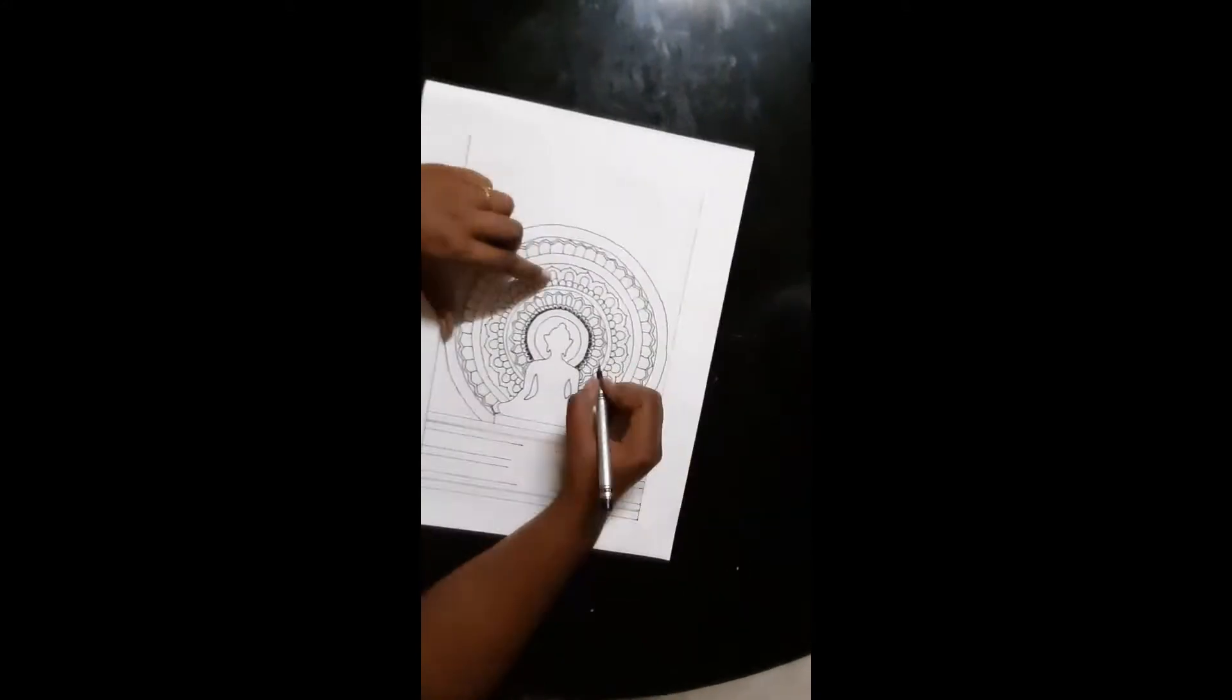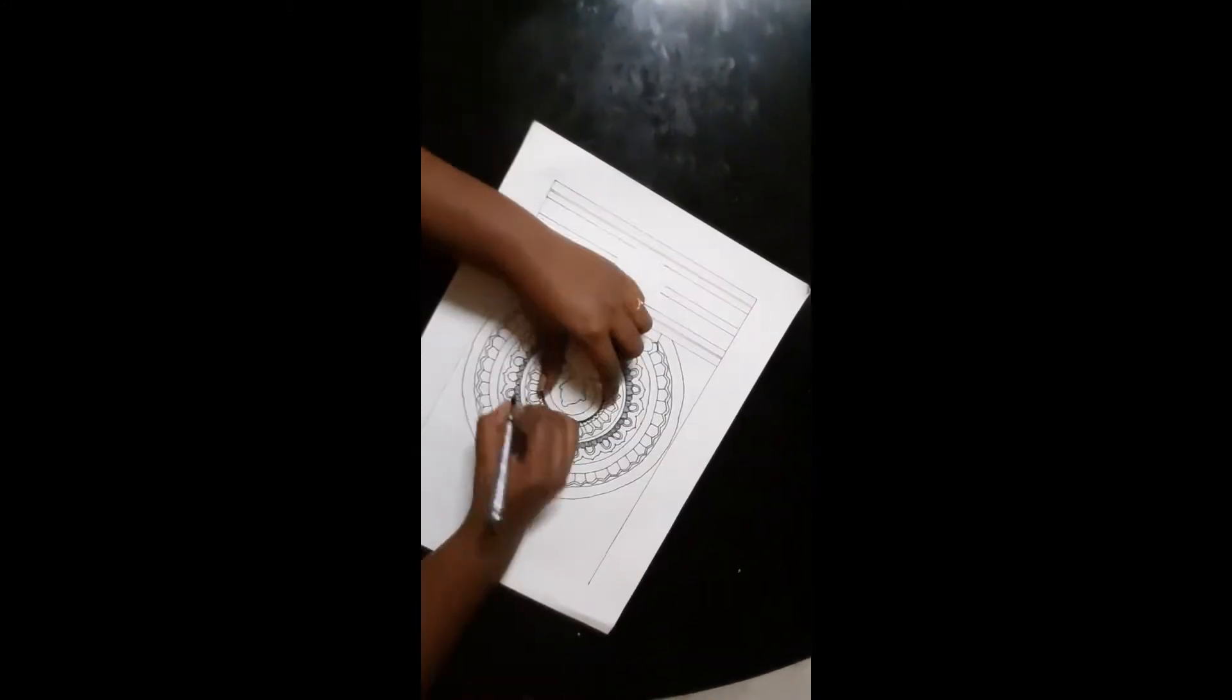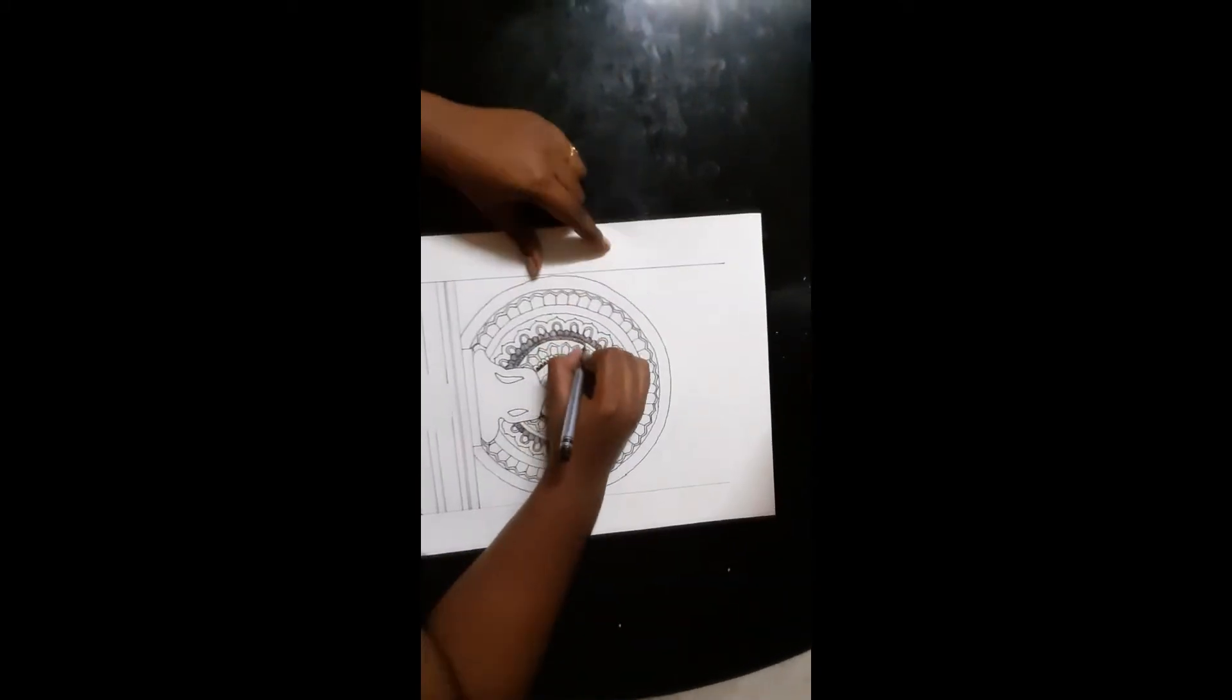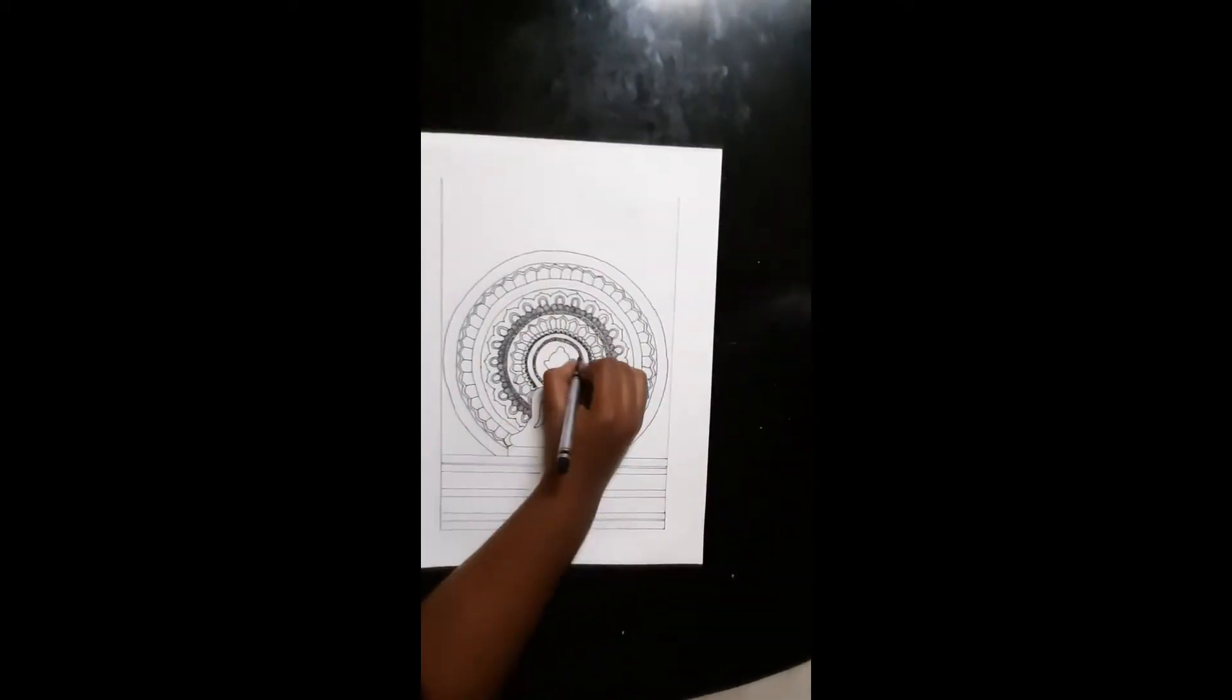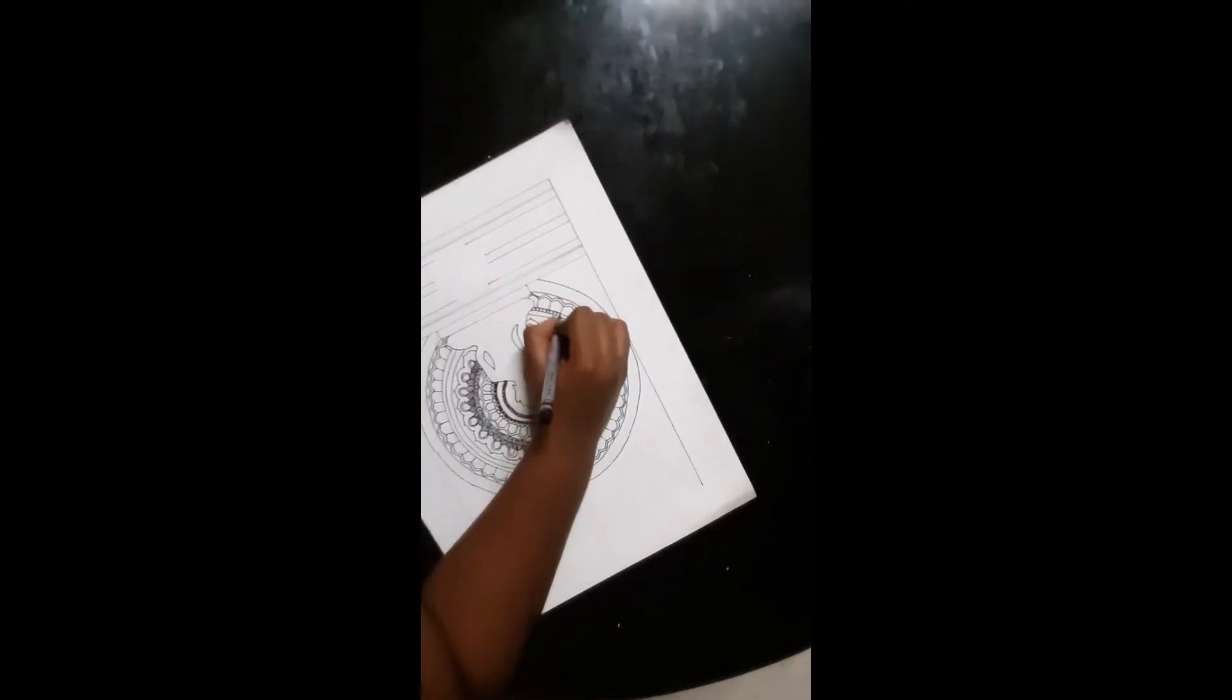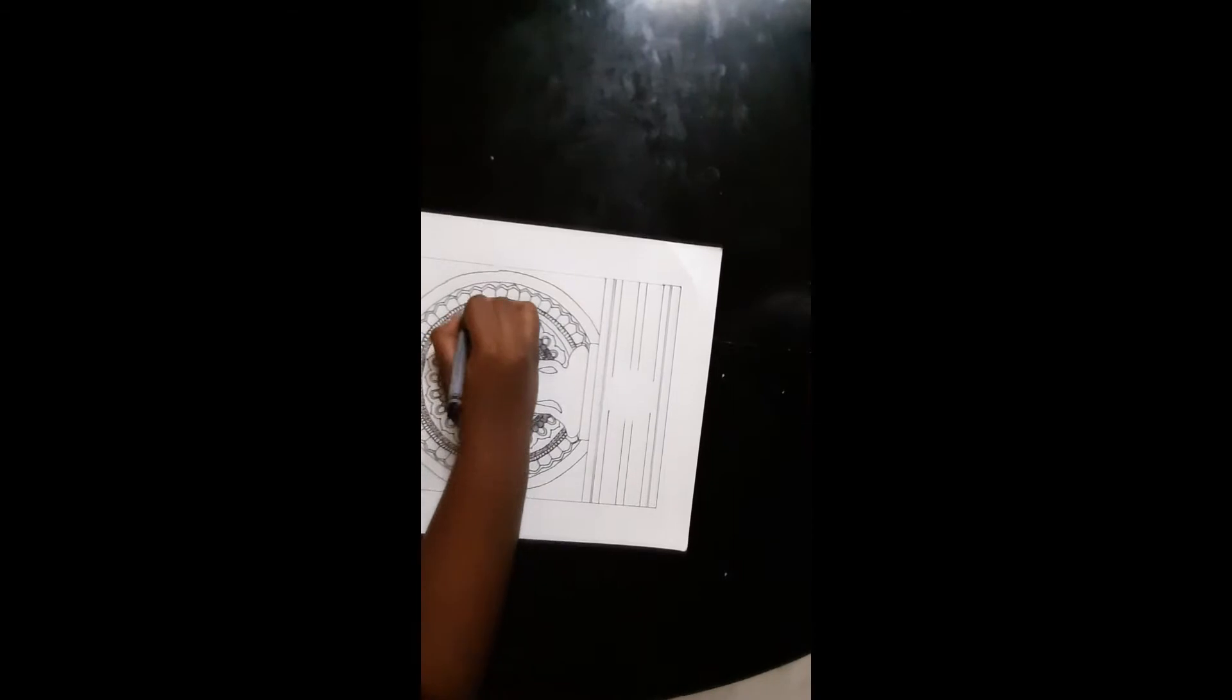The word mandala means circle in Sanskrit. Circular shapes often have some kind of attractive symbolism in them. They symbolize rebirth, representativeness, protection, spiritual growth, and many other things.